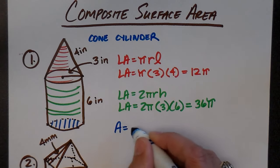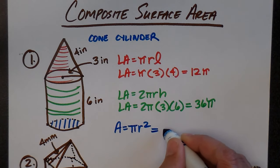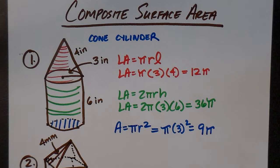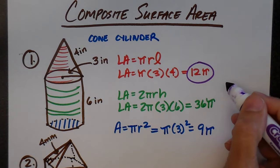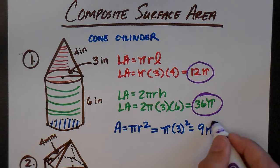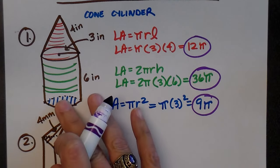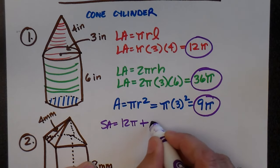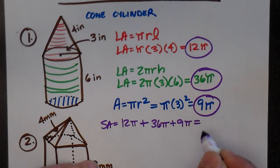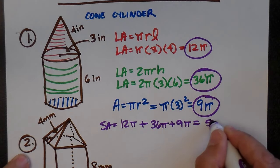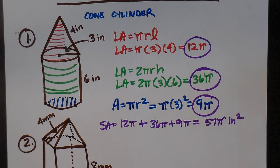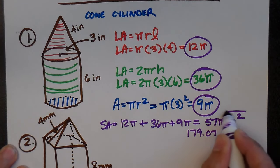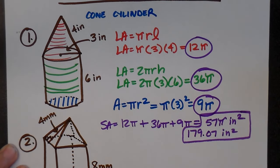The bottom base of the cylinder is also showing, but not the top. The area of a circle is pi r squared, so pi times 3 squared equals 9 pi. Now for the total composite surface area: 12 pi (cone lateral) plus 36 pi (cylinder lateral) plus 9 pi (cylinder base) equals 57 pi, which is approximately 179.07 inches squared.